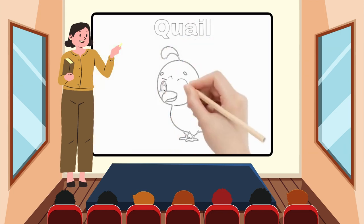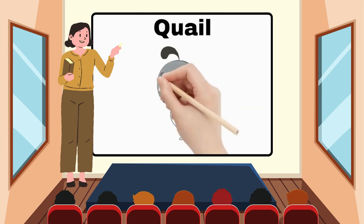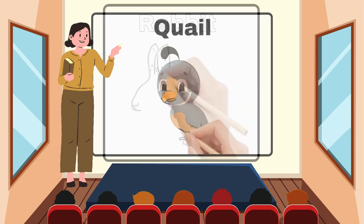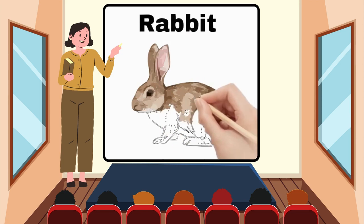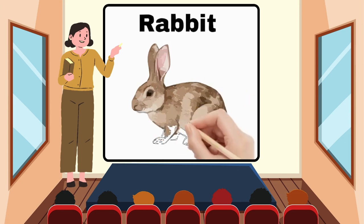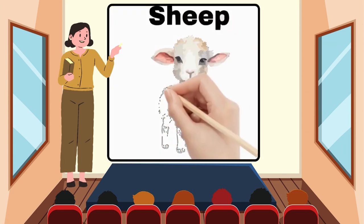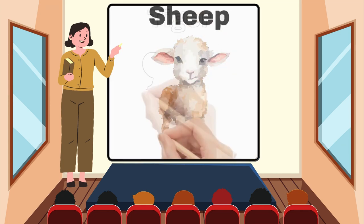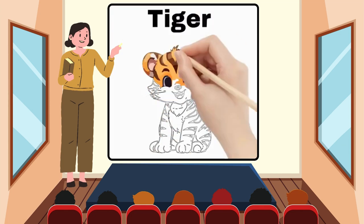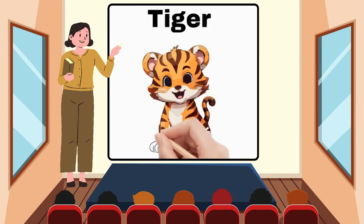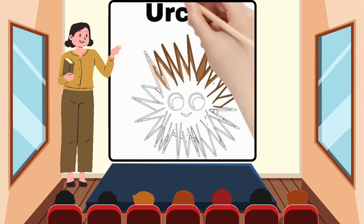Q for Quail. R for Rabbit. S for Sheep. T for Tiger. U for Urchin.